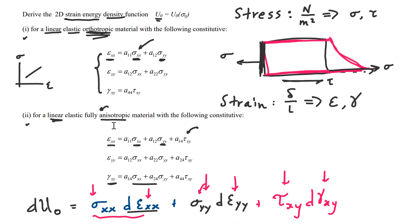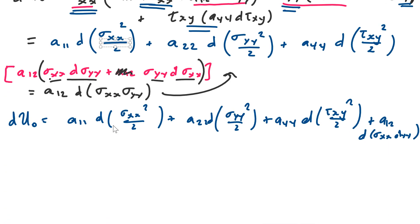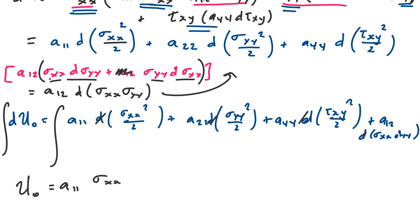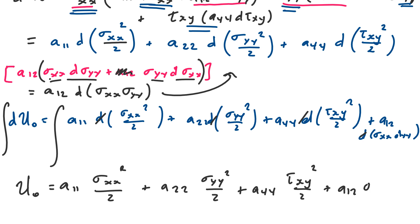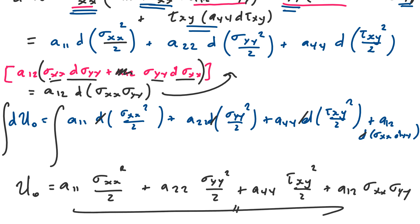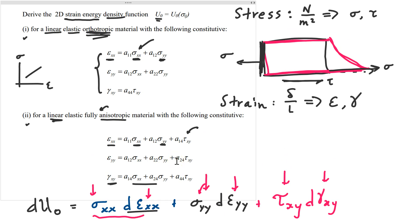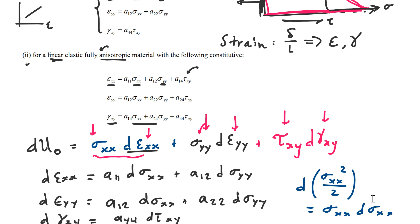Why have we done this? Because the question asks for the strain energy density function, not the differential. The whole reason we found this shortcut is so we can now integrate the whole thing. Since the integral of a differential is just itself, we drop the differentials and the answer is: U₀ = a11 (sigma_xx² / 2) + a22 (sigma_yy² / 2) + a44 (tau_xy² / 2) + a12 (sigma_xx · sigma_yy). That's the strain energy density — how much strain energy is stored upon elongation. I encourage you to try the second example yourself to practice finding these differentials for integration.